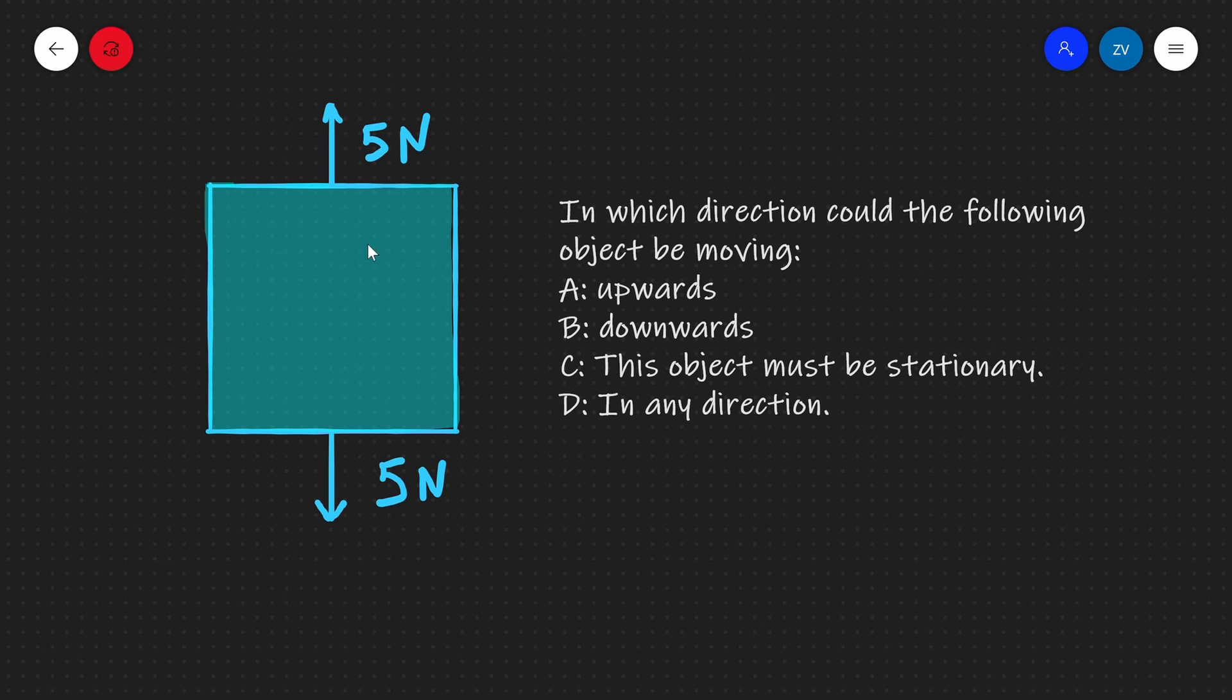So, let's imagine that we have an object over here with a 5 newton force acting upwards and a 5 newton force acting downwards.